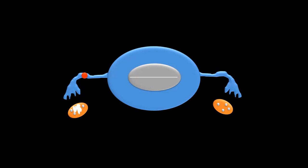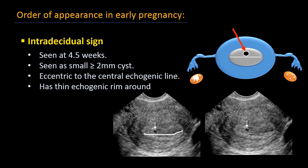Fertilization of the ovum occurs in the fallopian tube, and it starts cell division as it moves down the fallopian tube. Once it gets into the uterine cavity, it digs a hole and burrows itself into the endometrium eccentrically and covers itself over. This is the first sign we look for on ultrasound, which is called the intradecidual sac sign. It is seen by transvaginal ultrasound at 4 to 4.5 weeks after the last menstrual period. On ultrasound, it is a small 2 mm cyst located eccentric to the central echogenic line, with a thin echogenic rim around it.